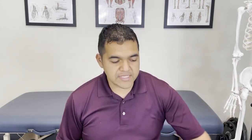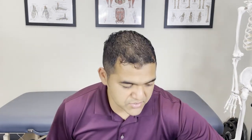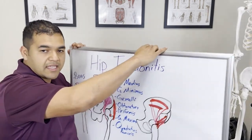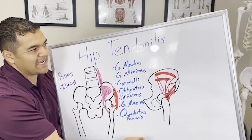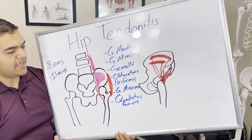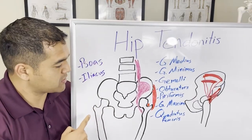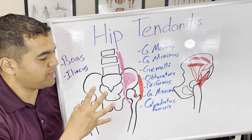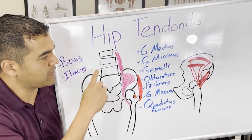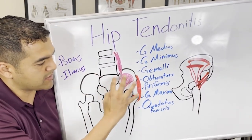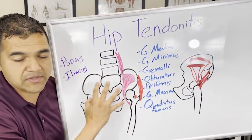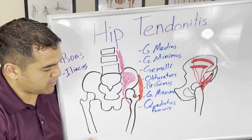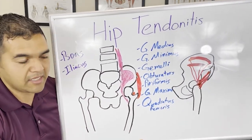I've got some pictures here to help us out with understanding the anatomy of hip tendonitis. What you're looking at here on this picture closest to me is the front of the hip bones. You've got the spine right here, and these are your pelvis bones or your hip bones. Your hip joints are out here, and here's your thigh bones coming down.